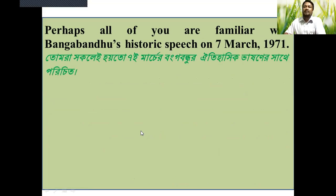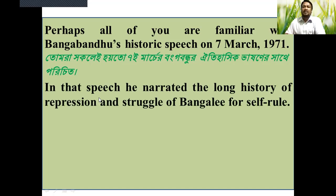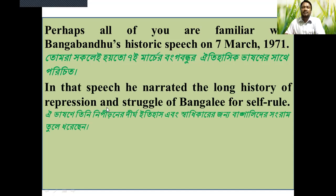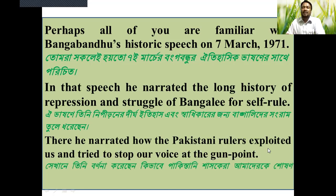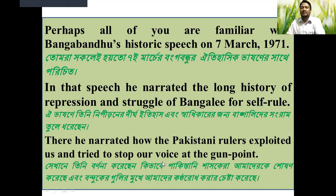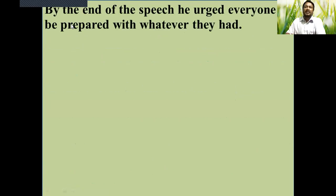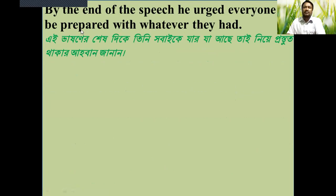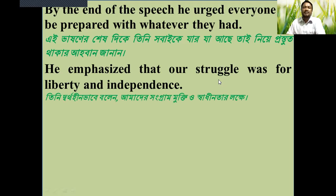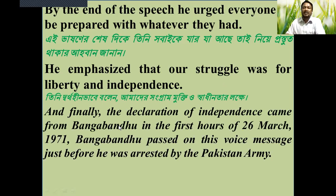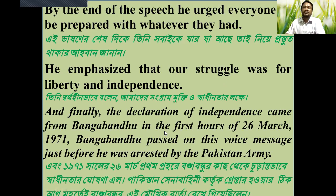This declaration of independence was sent by Bangabandhu shortly after midnight of 25th March, in the early hours of 26th March 1971, for transmitting throughout Bangladesh over the EPR transmitter. Perhaps all of you are familiar with Bangabandhu's historic speech of 7th March 1971. In that speech, he narrated the long history of repression and struggle of Bengalis for self-rule. He narrated how Pakistani rulers exploited them and tried to stop their voice at gunpoint. By the end of the speech, he asked everyone to be prepared with whatever they had, emphasizing that their struggle was for liberty and independence. And finally, the declaration of independence came from Bangabandhu in the first hours of 26th March 1971. Bangabandhu passed on this voice message just before he was arrested by the Pakistan army.